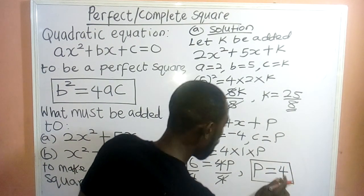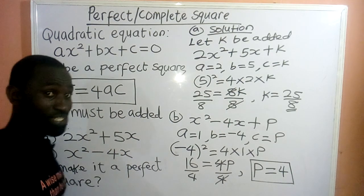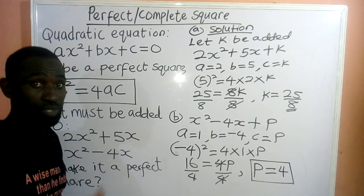So, which implies 4 must be added to x² - 4x to make it a perfect square.